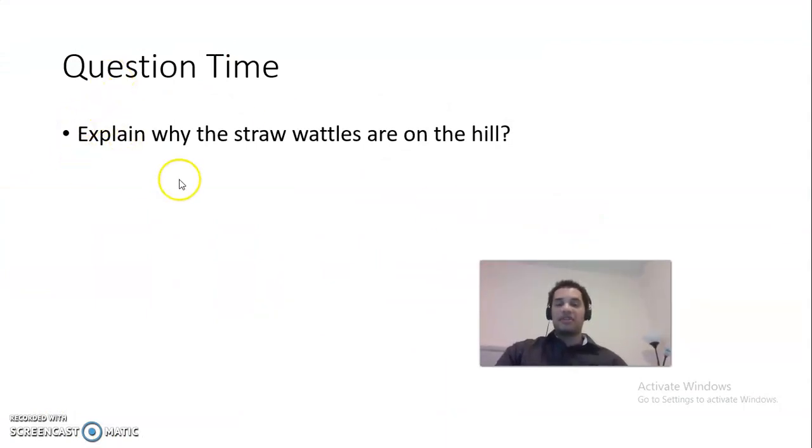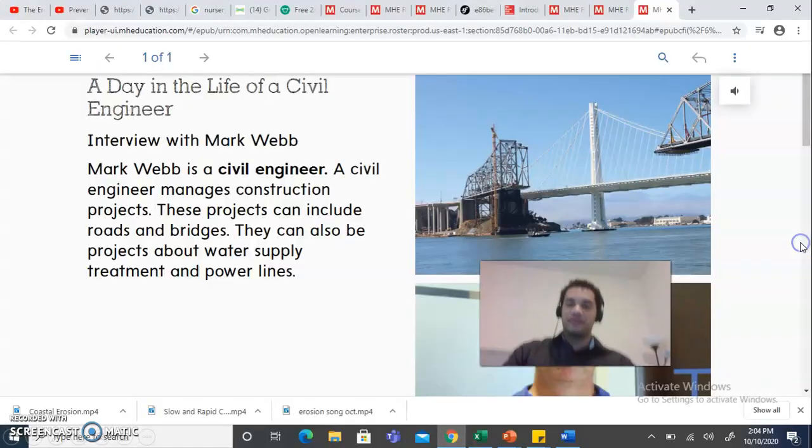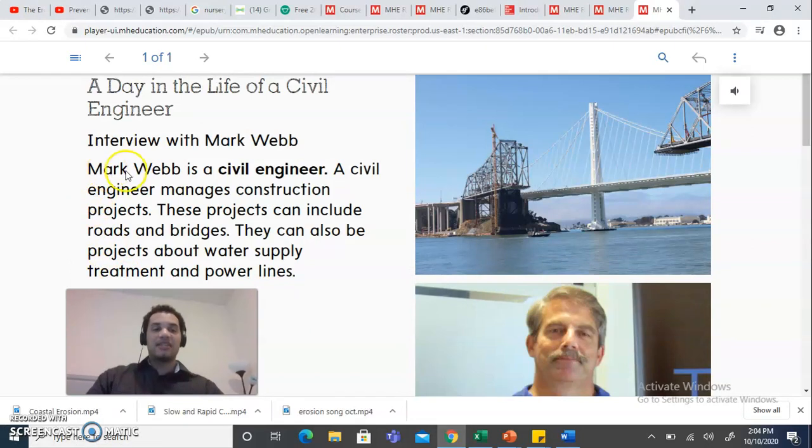Okay, so question time. So this also that you need to put on Seesaw. It says explain why the straw wattles are on the hill. Why do you see straw wattles on the hill? Let's keep it going. It says a day in the life of a civil engineer. All right, so it says Mark Webb is a civil engineer. So this is one of your new vocabulary words. A civil engineer manages construction projects like what you see on the bridges. These projects can include roads and bridges. They can also be projects about water supply, treatment, and power lines.